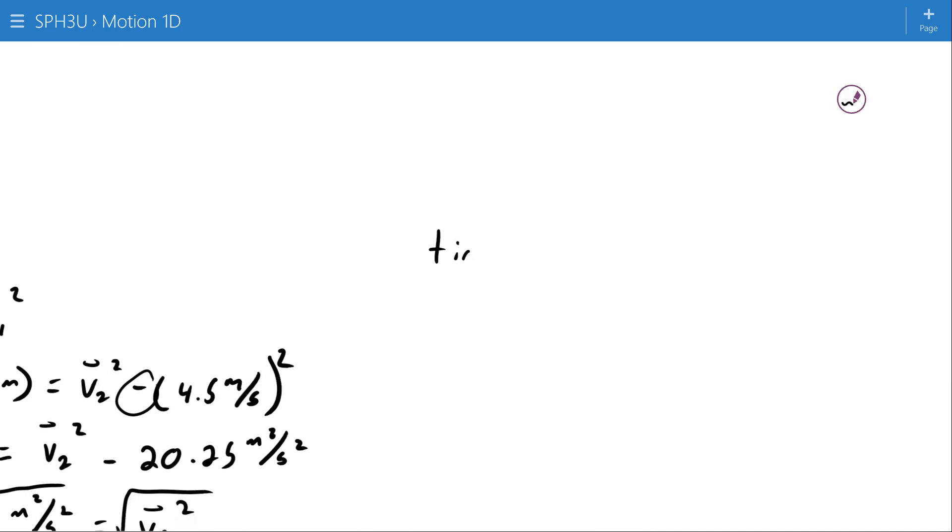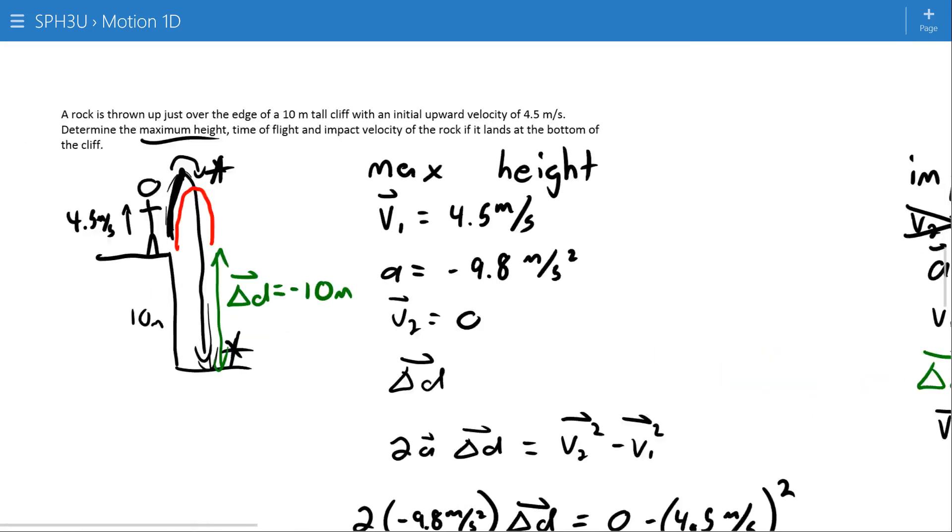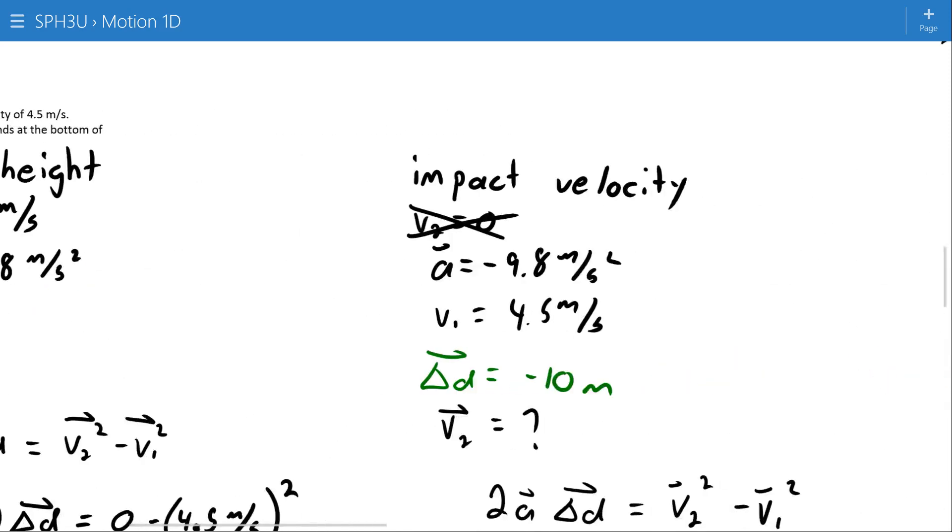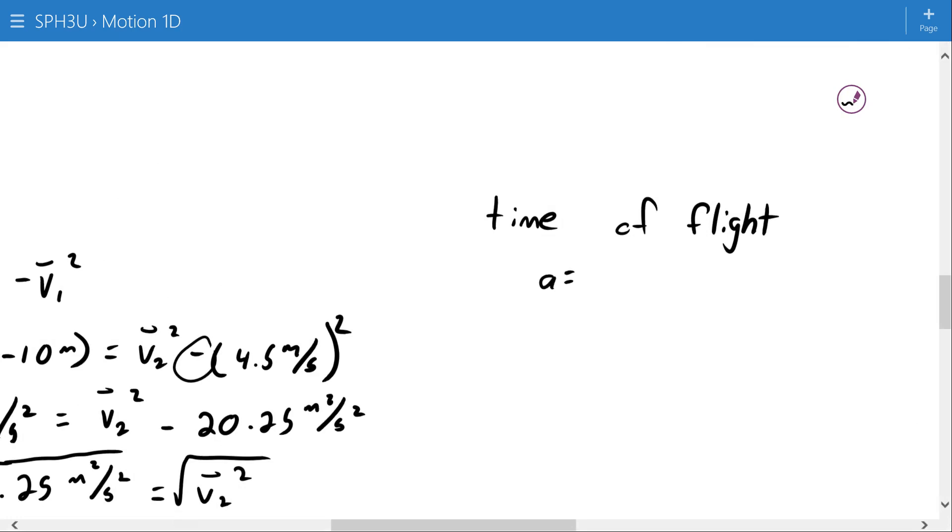Alright, time of flight. Time of flight means the entire time from when it leaves here all the way up and all the way back down. So again, I'm looking for information that pertains to that point right there, so I can use the same set of information that I used for my impact velocity. That means my acceleration is negative 9.8 meters per second squared. My V1 is 4.5 meters per second, that's been true for every question. But here my delta D, my change in position from when the rock was thrown to when it lands, is 10 meters down. Here I'm interested in my time.